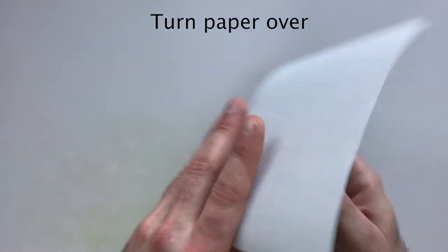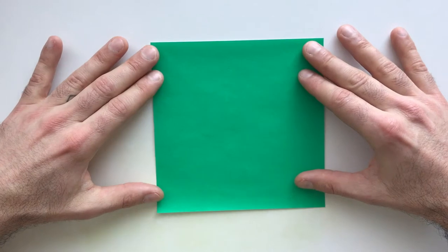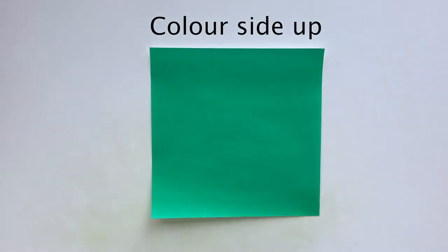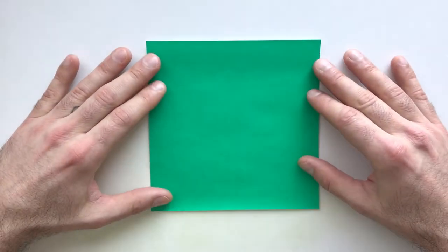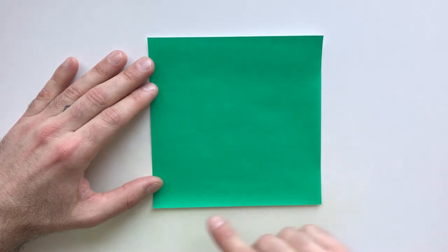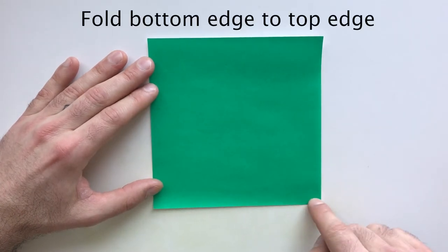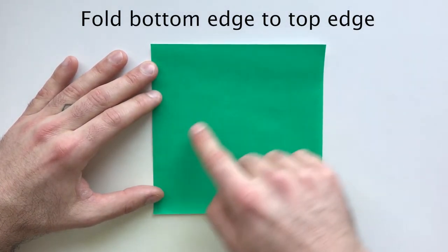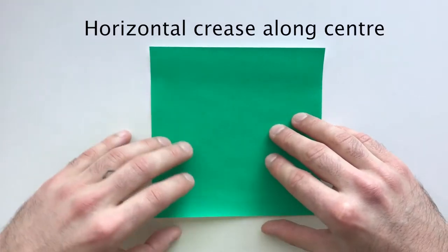Once that's done, turn the paper back over so the color side's facing up. To start, we'll fold this bottom edge up to the top edge to make a horizontal crease along the center of the paper.